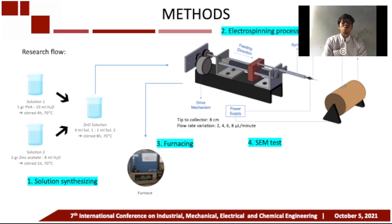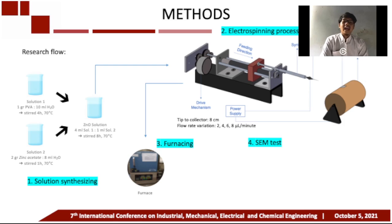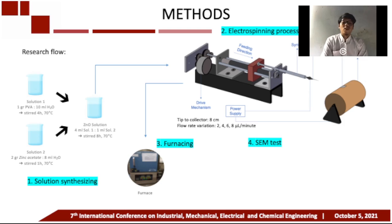The solution flow rate in the electrospinning process used variations of 2, 4, 6, and 8 microliters per minute. After the spraying process, the samples are sintered at a temperature of approximately 932 degrees Fahrenheit for 60 minutes to dissolve organic matter and form zinc oxide in the form of crystals. Subsequently, scanning electron microscope testing is performed on the fabrication results.